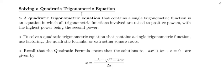Now we're going to talk about how to solve a quadratic trigonometric equation. A quadratic trigonometric equation that contains a single function is an equation in which all trigonometric functions involved are raised to positive powers with the highest power being the second power. When you have a quadratic trigonometric equation, all of your trigonometric functions are going to be the same — so you're going to have all sines or all cosines, for example.